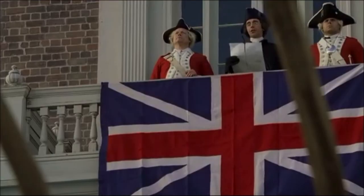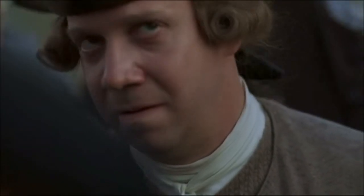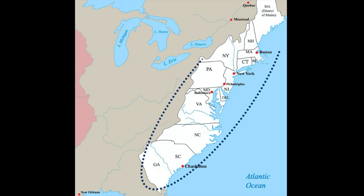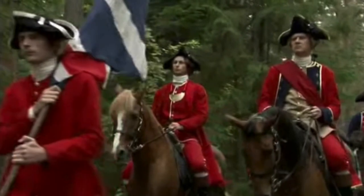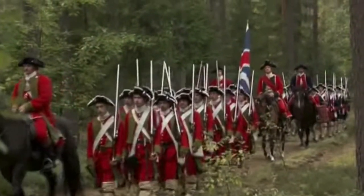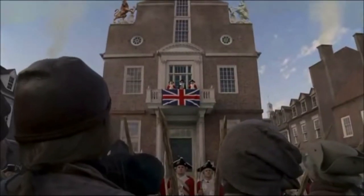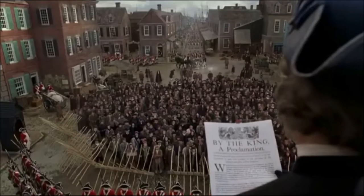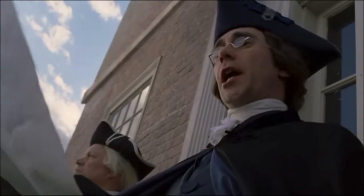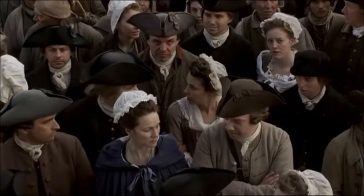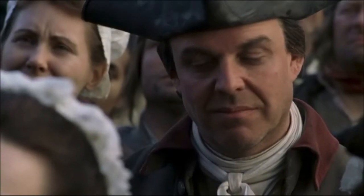Tensions between the American colonies and the British authorities had been mounting. Up until 1764, the British had for the most part left the 13 colonies to govern themselves. However, victory in the French and Indian Wars of 1756-63 had left the crown short of cash. Thus, in an attempt to recoup its revenue, the British government introduced a series of taxes on the colonies, such as the Stamp Act of 1765, the Townshend's Acts of 1767, and the infamous Tea Act of 1773.